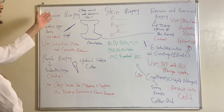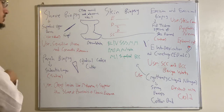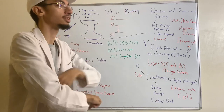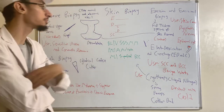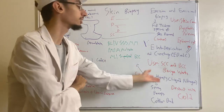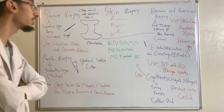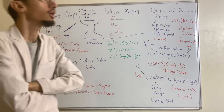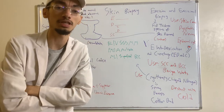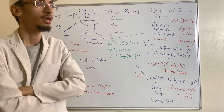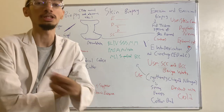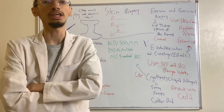These techniques vary: you can do a shave biopsy, a punch biopsy, an excisional biopsy, electrodesiccation and curettage, or cryotherapy. We're going to talk about each of these six different types, what the differences are, and the indications for each one.